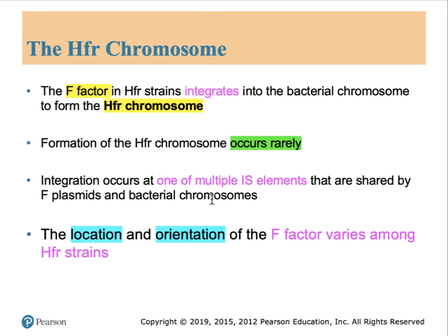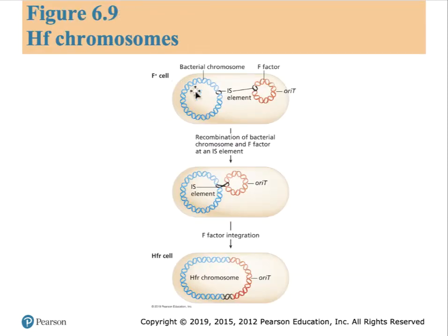The location at which this integration occurs is at these multiple IS sites. A single plasmid may be inserted in one of two directions, using any one of its four IS elements, combined with any of the IS elements on the bacterial chromosome in either direction. So for various HFR strains, there could be a distinct orientation and location where the F-plasmid is found. Figure 6.9 shows a depiction of a red plasmid being integrated into the blue bacterial chromosome using the common IS elements. A single crossover event between two circular molecules results in the formation of a giant circular molecule.